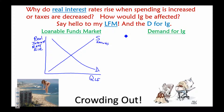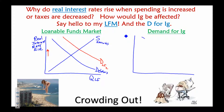When the government decides to increase spending, they can raise taxes, print money, or borrow money — and typically they borrow. When we demonstrate increased government spending, we show that the demand for loanable funds has increased. When that happens, real interest rates rise. Crowding out means that higher interest rates are going to decrease the amount of investment that takes place.